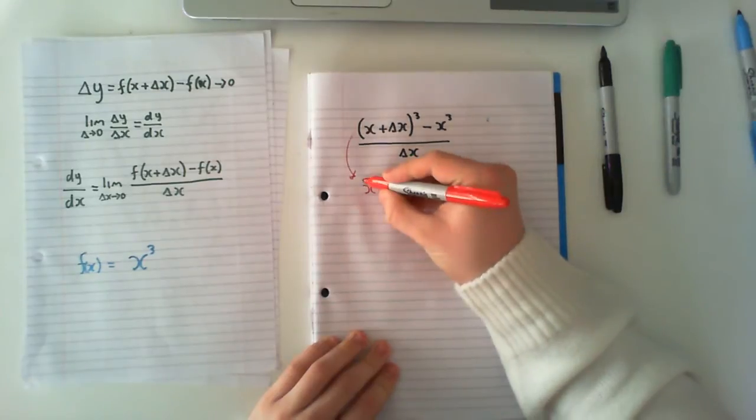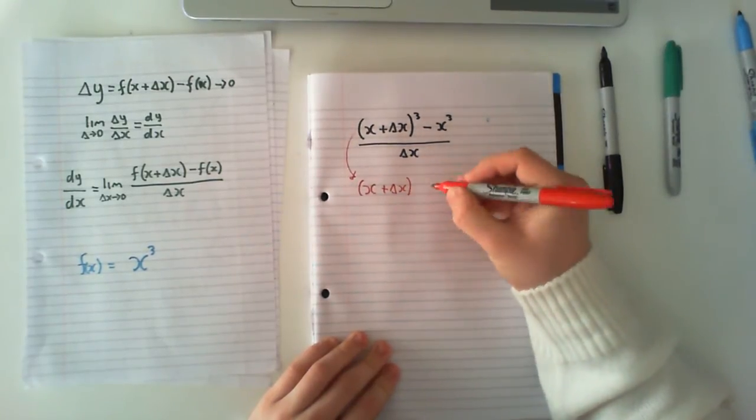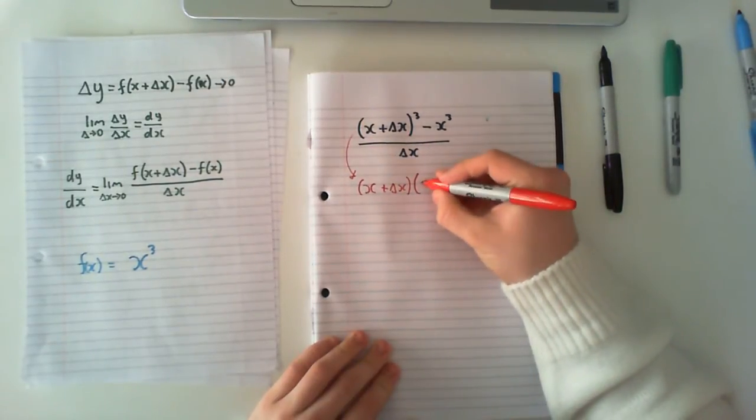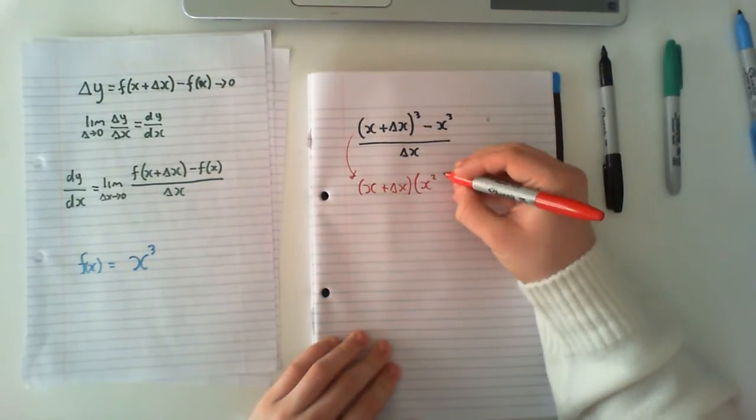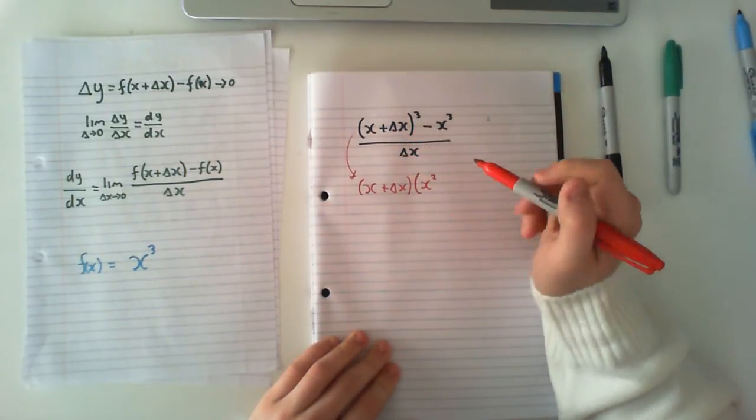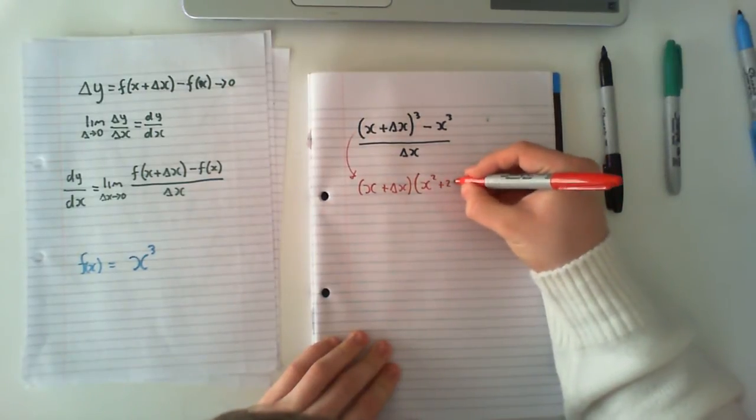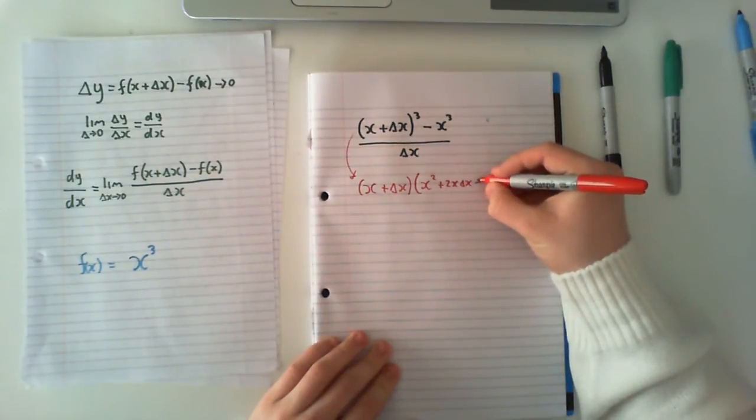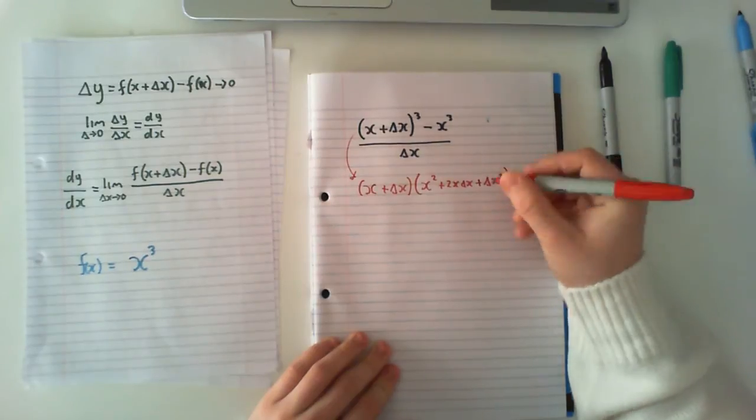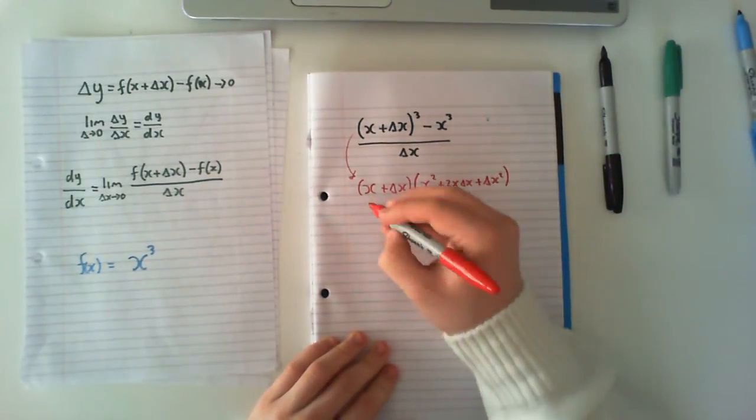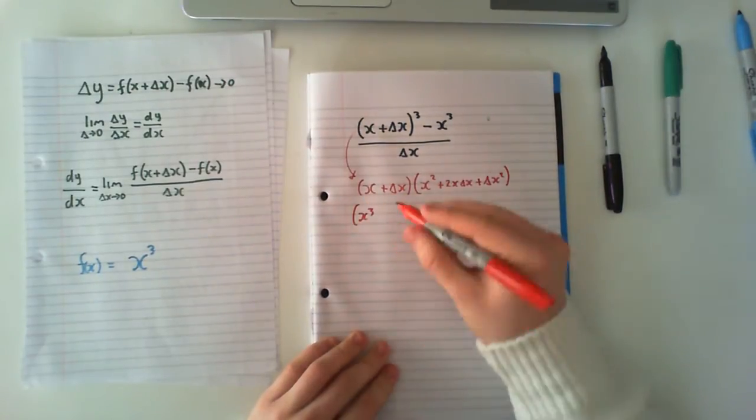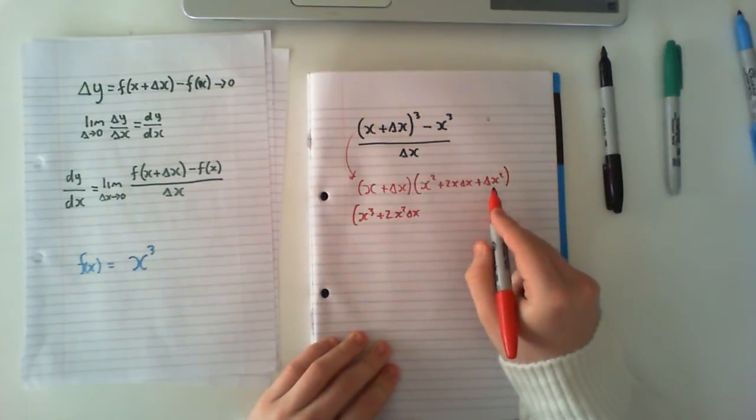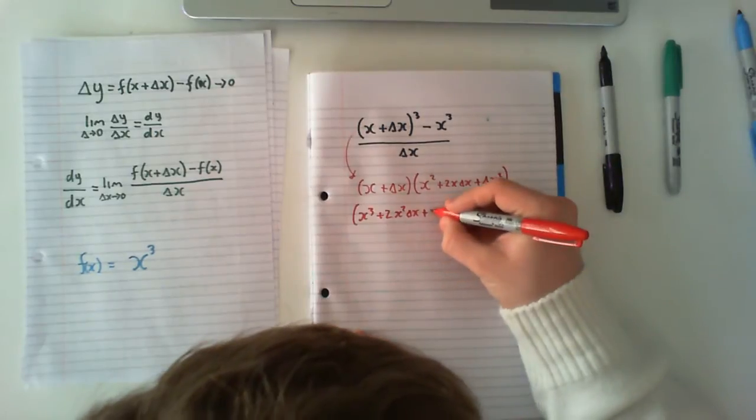First what I'll do is I'll put one term outside and we're going to have just it squared first. So we have x squared, we have delta x by x twice, so 2x delta x. And then finally these two are multiplied together, so we have delta x squared.